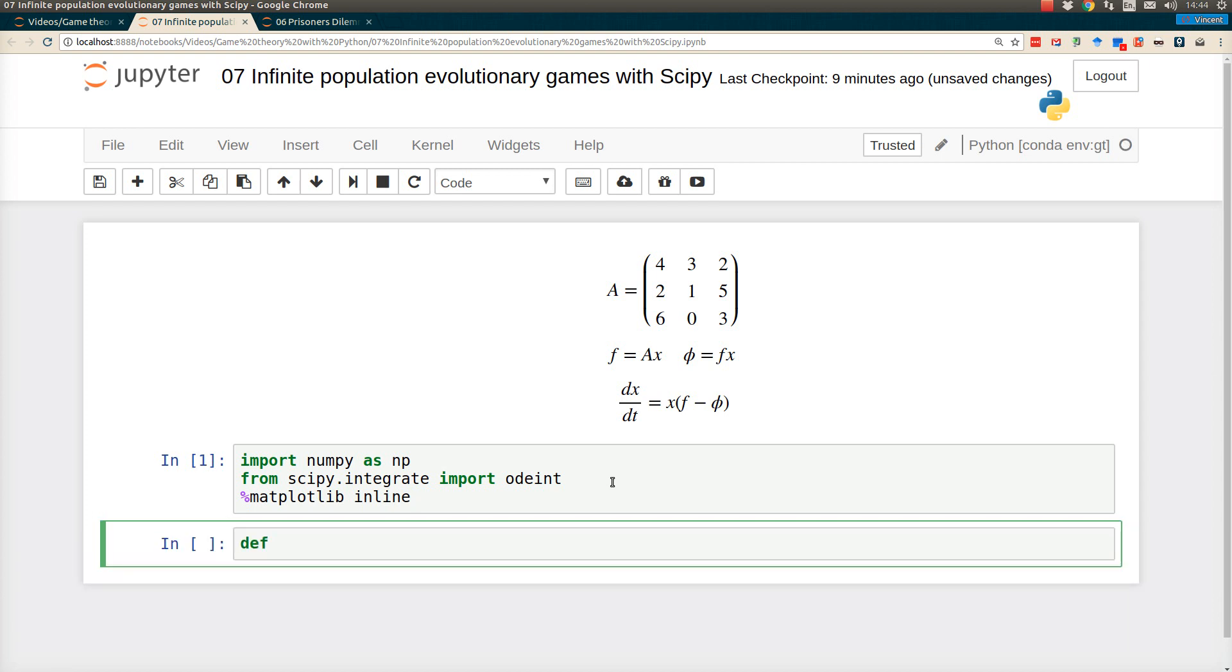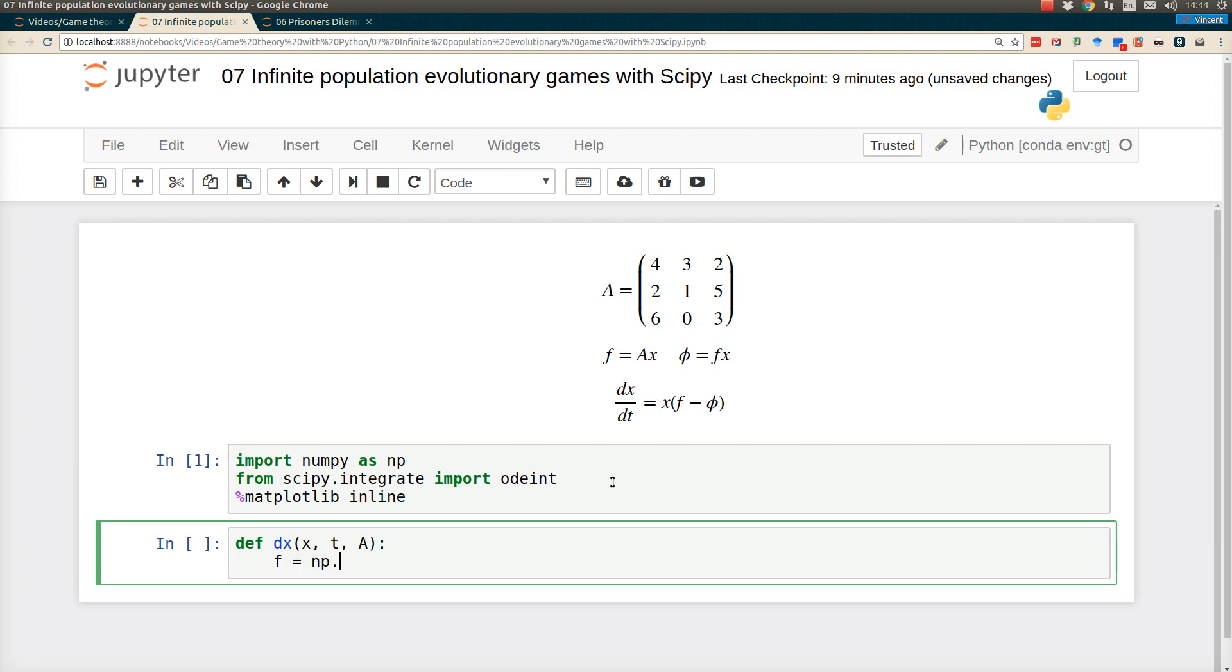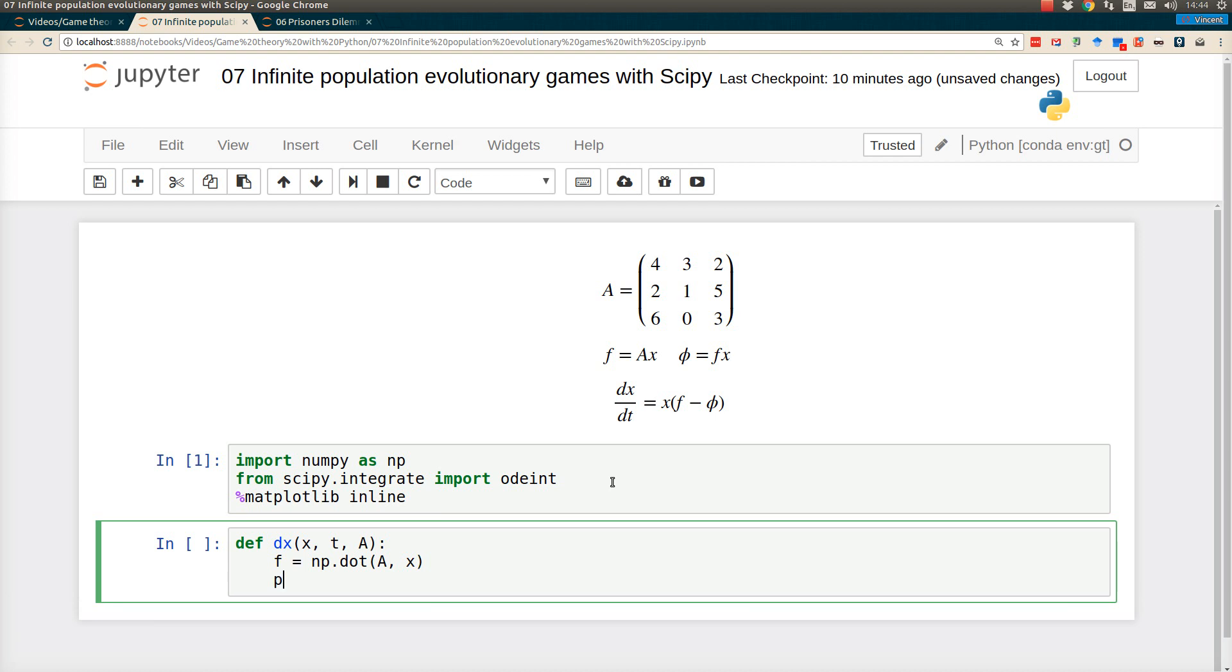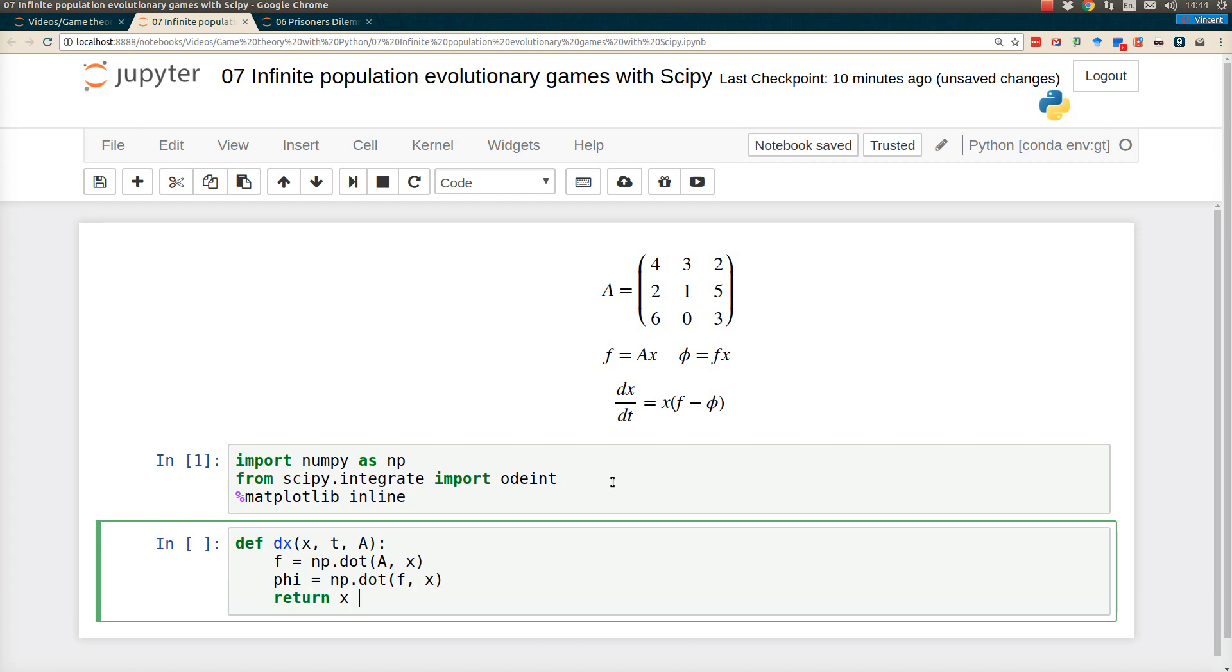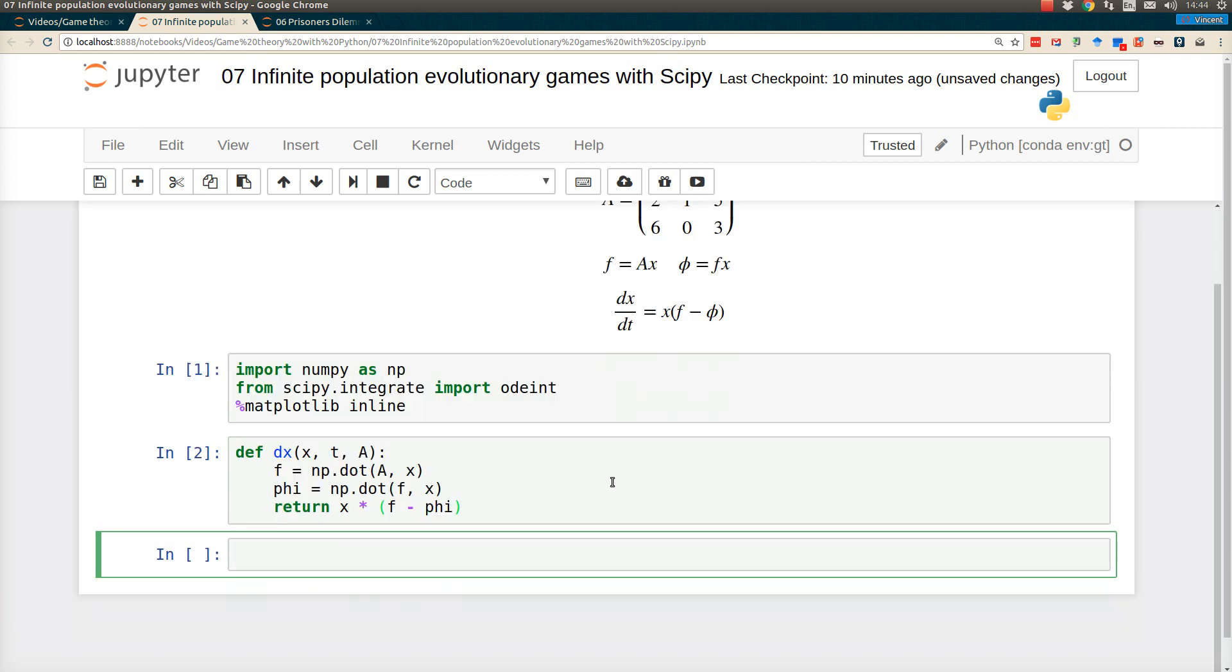Once I've done that, I'm going to define my derivative on the left numerically. That's defined by setting up f at every single time step. So that's just A times x, whatever x is, as it changes over time. And then phi is f times x, again over time. What I return is x times f minus phi.